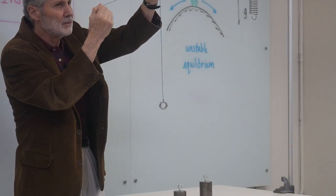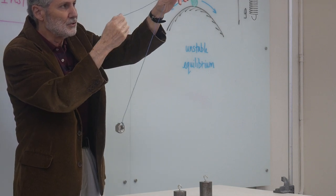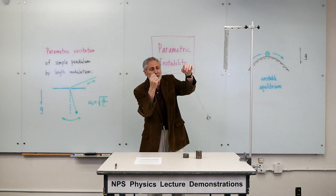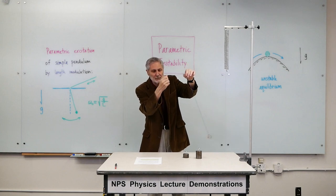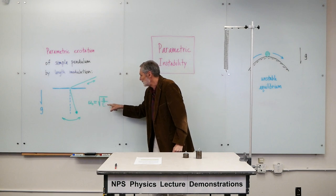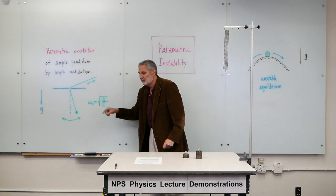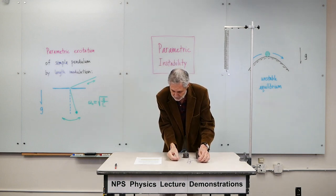I have a simple pendulum, and I am now modulating the length. And you can see the drive frequency here is approximately twice the pendulum frequency. Whenever you modulate an oscillator, whenever you modulate a parameter upon which the frequency depends, you can get parametric excitation.